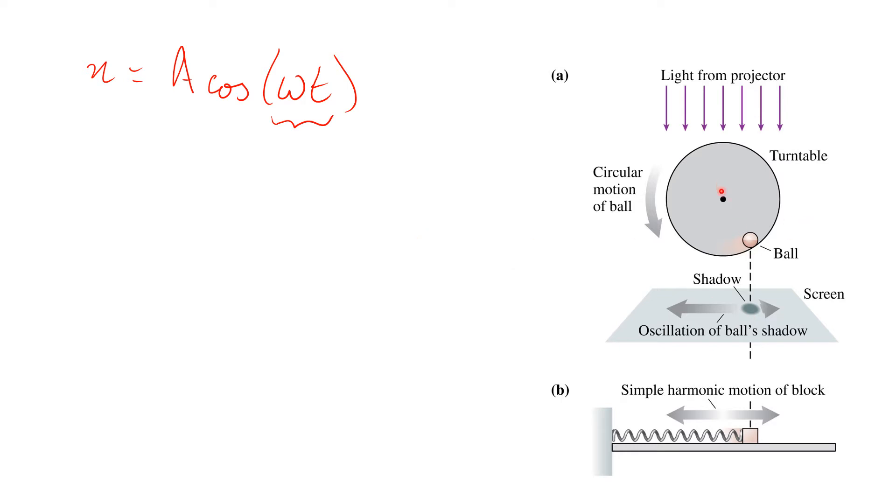Well, the distance, the horizontal distance, if we take this as being a zero angle here, our horizontal distance is just going to be the cos of whatever our angle is multiplied by the radius of our turntable. So r cos theta.